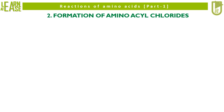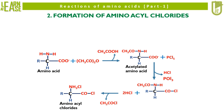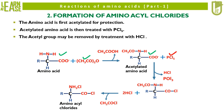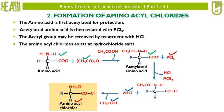The second reaction is formation of aminoacyl chlorides. The amino acid is first acetylated for protection. Acetylated amino acid is then treated with PCl5. The acetyl group may be removed by treatment with HCl, and the aminoacyl chlorides exist as hydrochloride salts. Carefully see the reactions and the intermediates formed to understand the mechanics of the reaction.